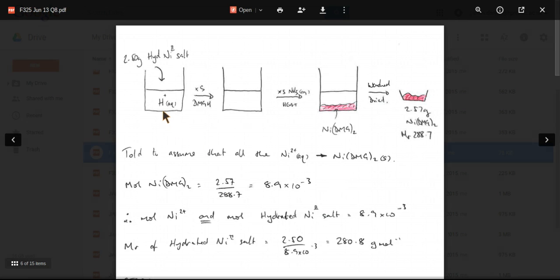I'll just go through the pictures here. Two and a half grams of hydrated nickel 2 salt. That's dissolved in acid, excess acid. That's going to free up the nickel 2 ions as aqueous nickel 2 plus.